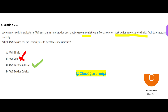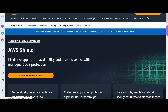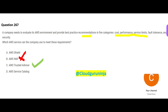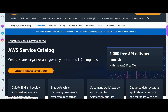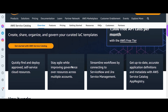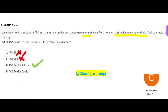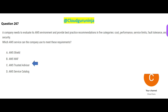Option A, Shield, is all about DDoS protection — the question does not ask anything about DDoS protection, so Shield is wrong. Option D is an infrastructure-as-code template that helps you share, organize, and govern it — it will not help you with providing recommendations, and that is why D is wrong. Trusted Advisor would be my final answer.